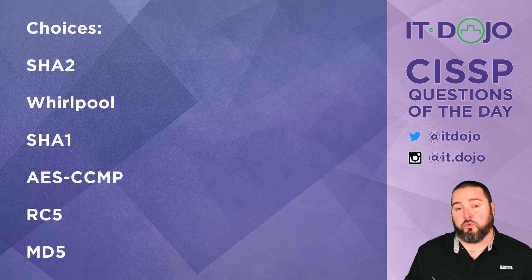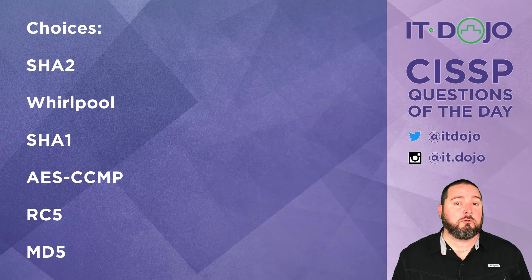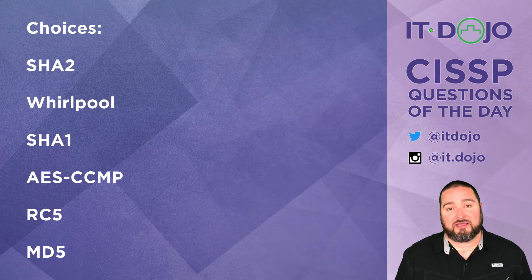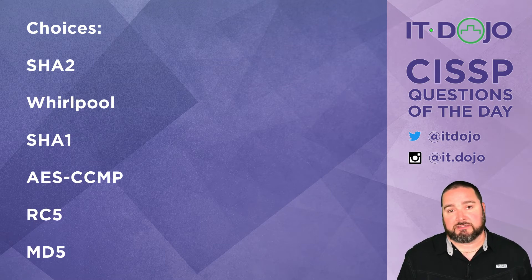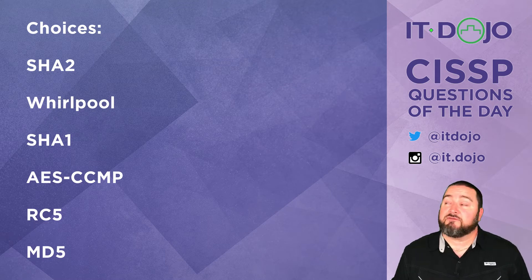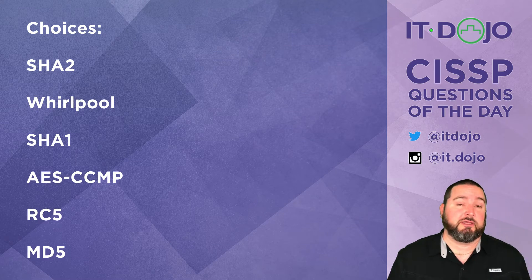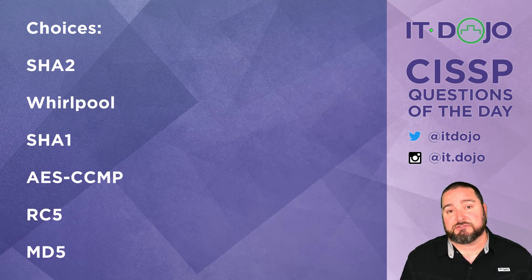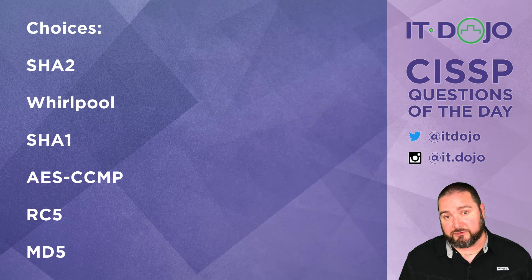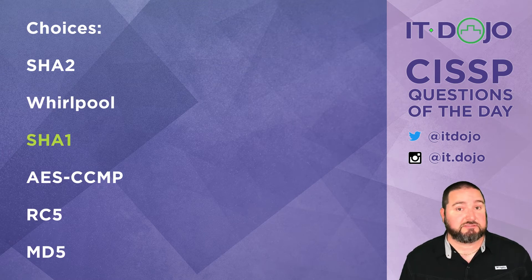Next up: Whirlpool is a 512-bit hash, so it is not one of our correct answers. Then we have SHA-1, and SHA-1 produces a 160-bit output — so that is one of our correct answers, being less than 200 bits.